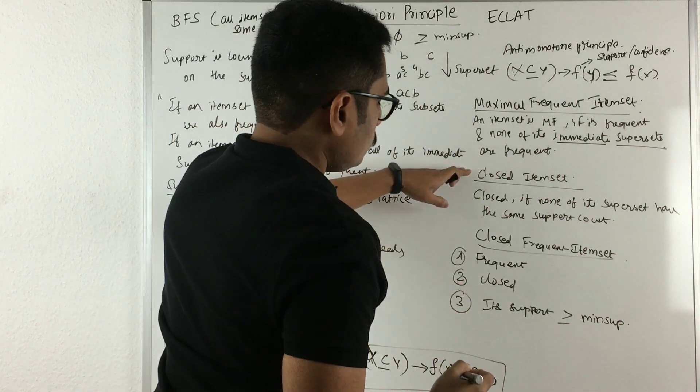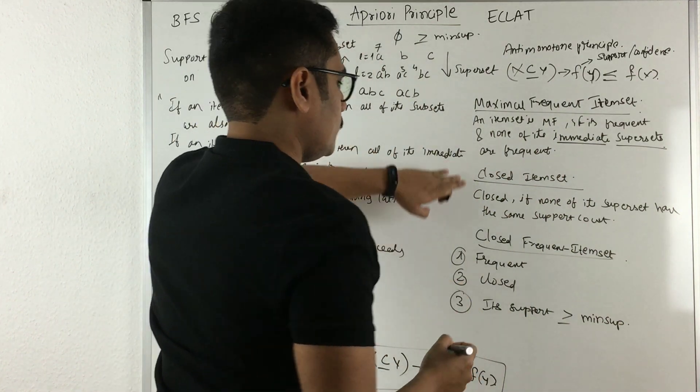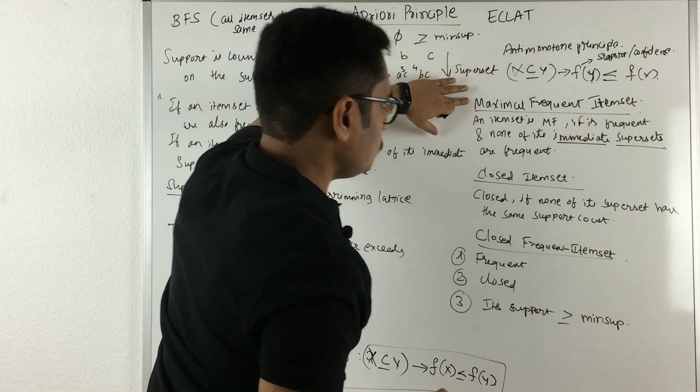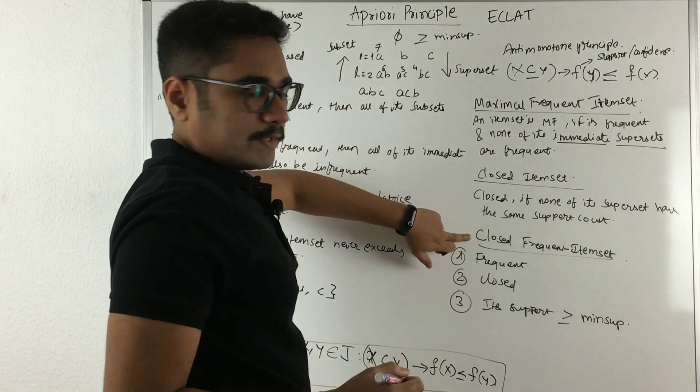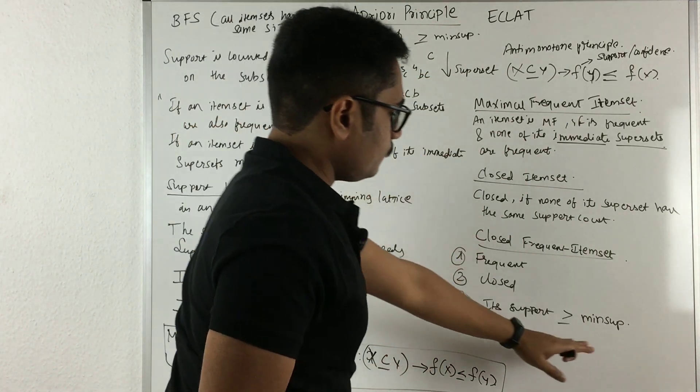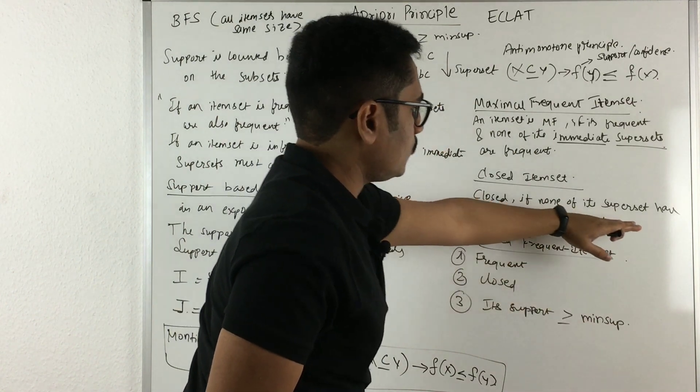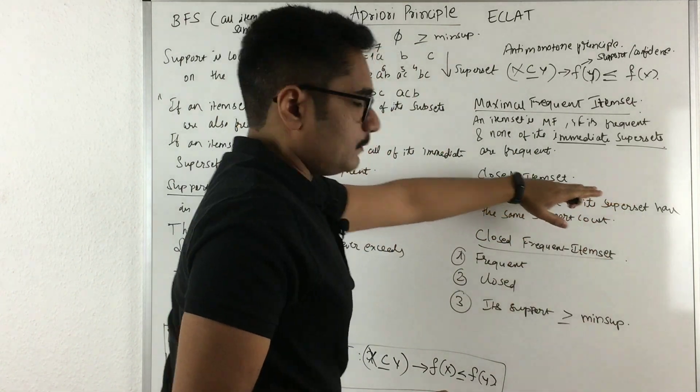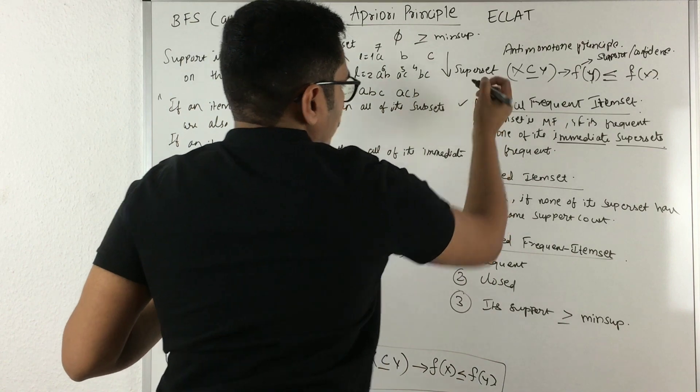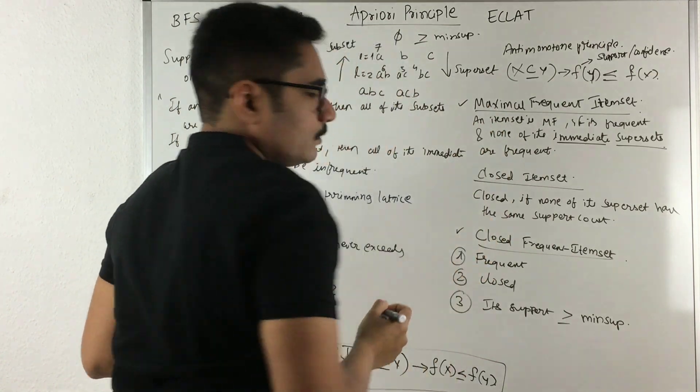Usually we don't do closed item set separately, but instead we find the maximal frequent and then we directly go with the closed frequent item set. Obviously, if this is the condition, then you should not check the closed item set separately. We usually do maximal frequent and then we go for closed frequent item set.